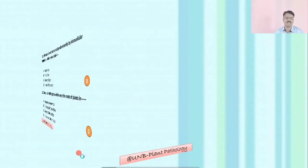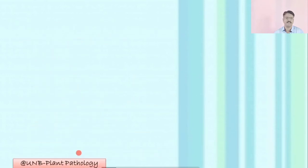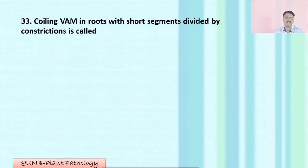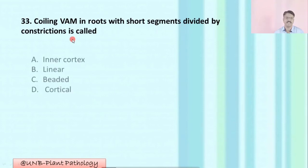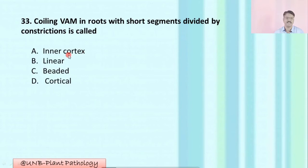Question number thirty-three: Coiling in roots with short segments divided by constriction is called — A: inner cortex; B: linear; C: beaded; D: cortical. The correct option is C: beaded.